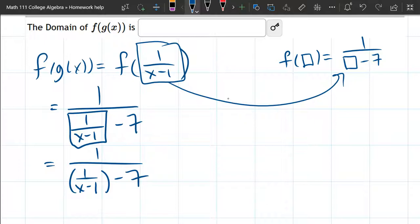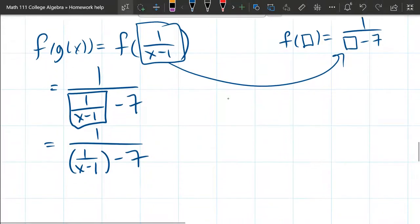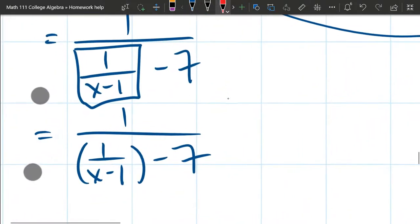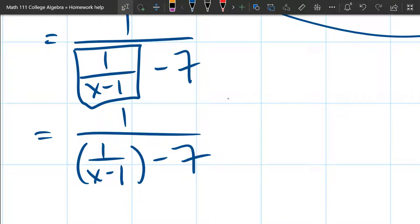Now, if I was going to just write f of g of x, I would add these two together with common denominator, which would be x minus one. But we're actually asked about the domain. So let's look at how this could be divided by zero. There are two ways that could happen.